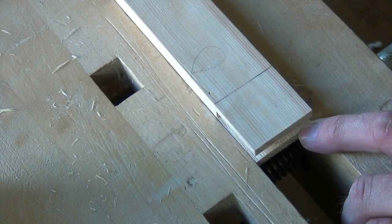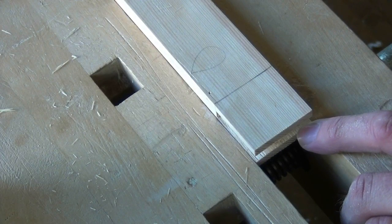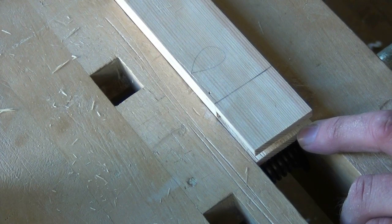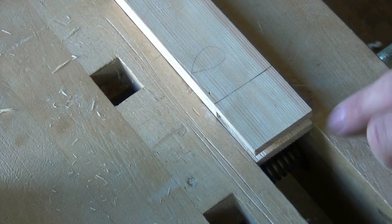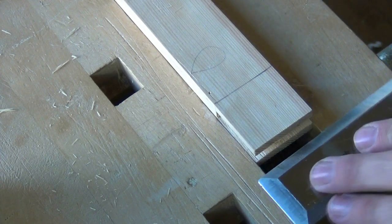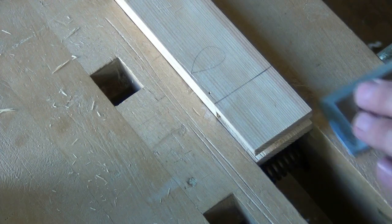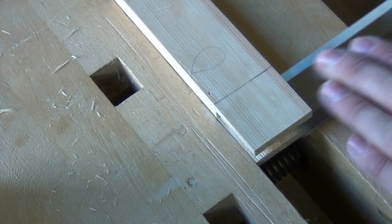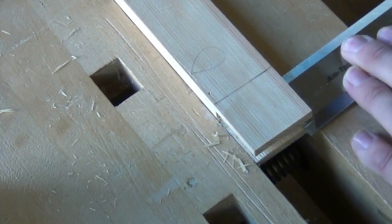If the cheeks inside your mortise aren't perfectly flat, you won't get a good joint. If you line up the knife lines with the front and back jaws of your vise, and then use the vise as a reference for your chisel, you can clean those inside faces and produce a lovely flat surface.